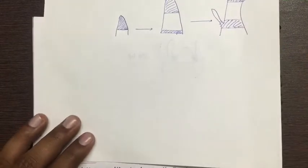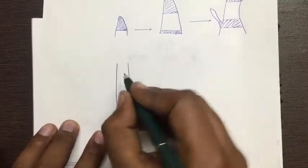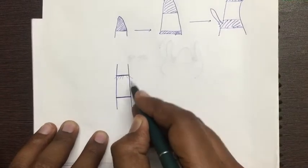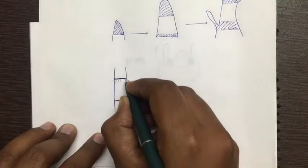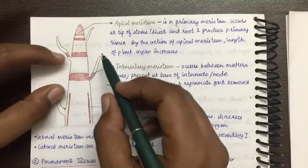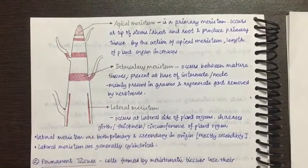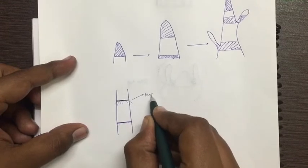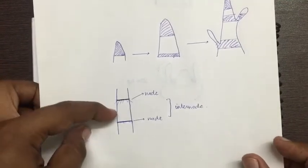You have all seen sugarcane or bamboo — these are very common plants. In sugarcane, there is a visible demarcation or joint along the stem. The swollen joint part of the stem is called a node, as shown in the diagram — you can see the branch emerging from the node. The portion of the stem between two nodes is called the internode. So node and internode are now understood.